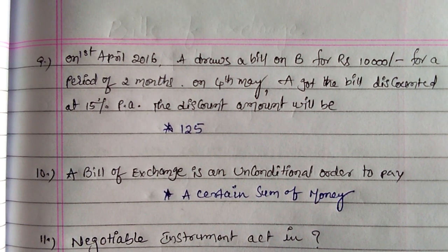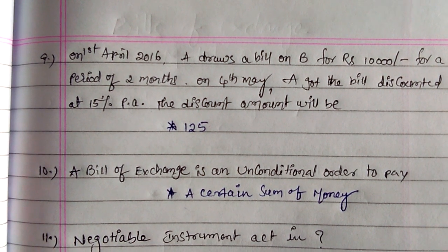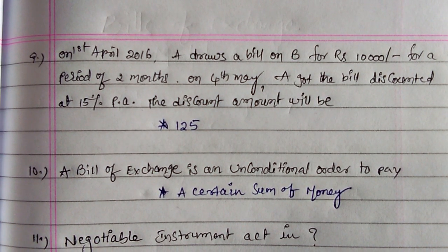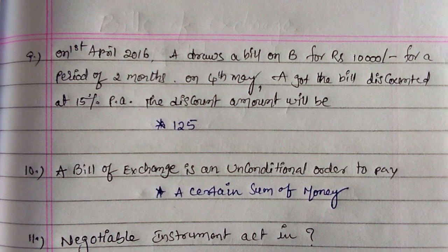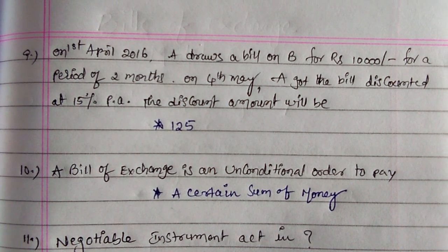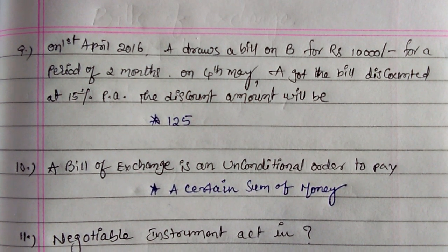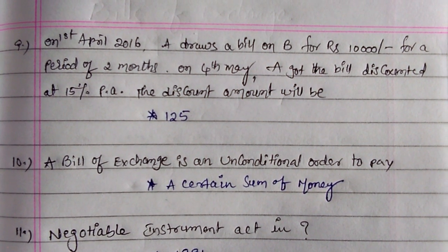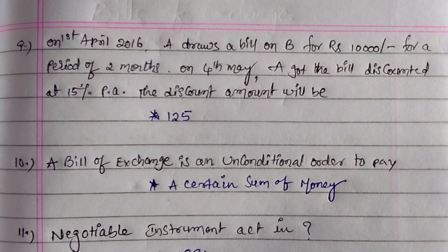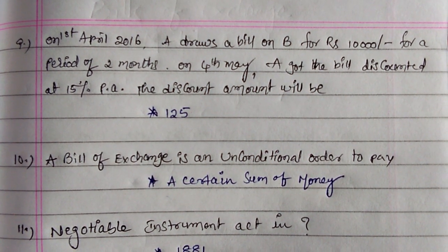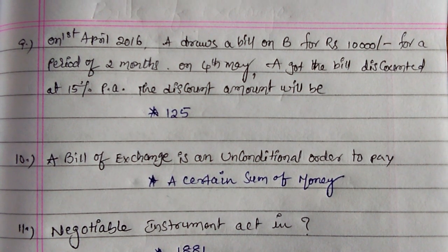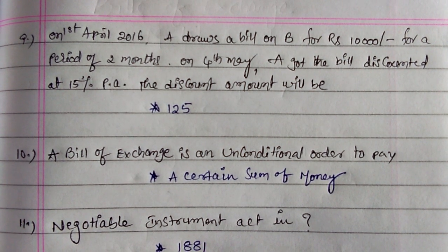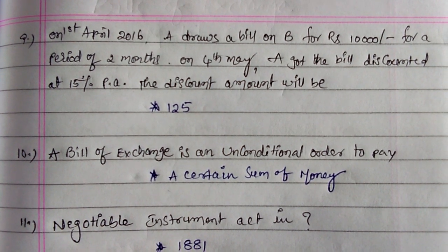On 1st April 2016, A draws a bill on B for Rs. 10,000 for a period of 2 months. On 4th May, A got the bill discounted at 15% per annum. The discount amount will be just 125 rupees, because the 2-month period had 1 month already completed, so calculated for 1 month only: 10,000 × 15% × 1/12 = 125.